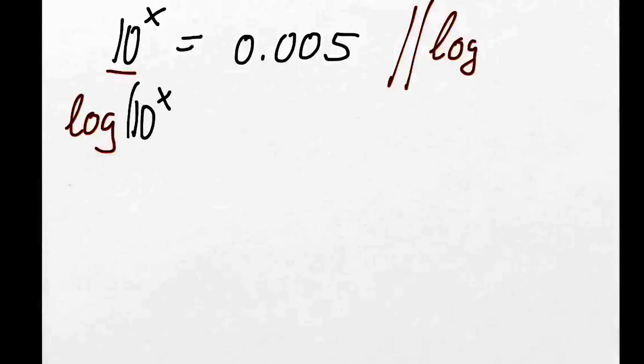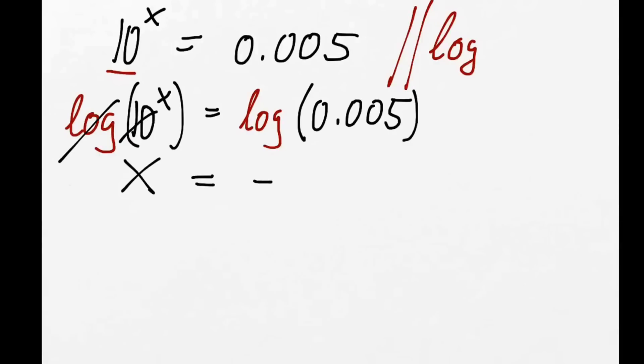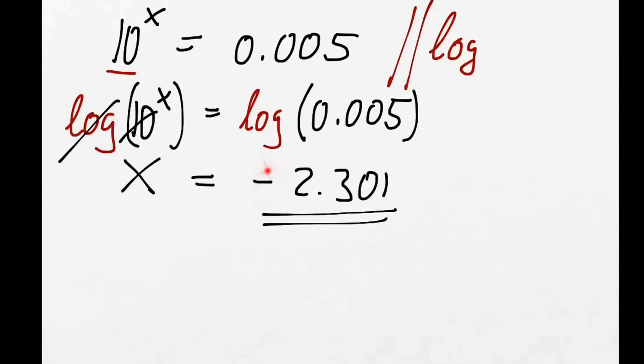10 to the power of x equals 0.005 — same old story. We need to get rid of '10 to the power of'. We've got log(10^x) equals log(0.005). Log cancels out. We've got x equals log(0.005), and when we put that in the calculator it gives us minus 2.301.